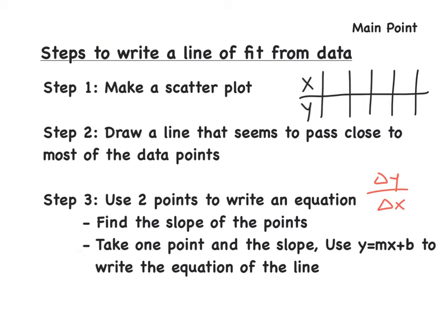Then, you take one point and the slope and you use y equals mx plus b to write the equation of the line. You plug in the points for y and x. You use the slope, plug it in there, and then you solve for b. Once you figure it out, you would write y equals mx plus b, and that would be what the line is.